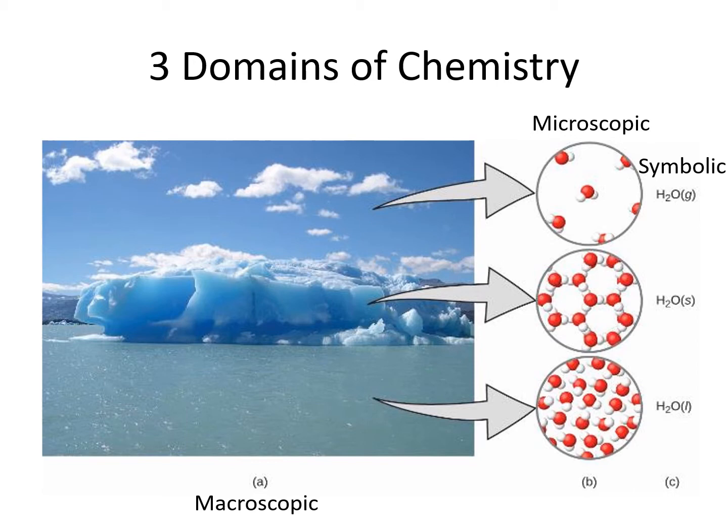The third domain is the symbolic domain. Rather than drawing pictures all the time, we use symbols to represent molecules and what they are doing in reactions. For example, we can represent solid water as H2O with an S next to it for solid, liquid water as H2O with an L for liquid, and water vapor as H2O with a G for gas.